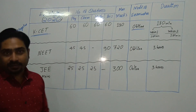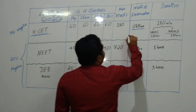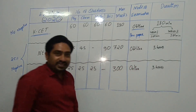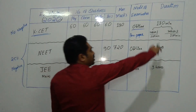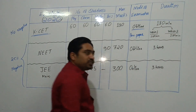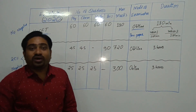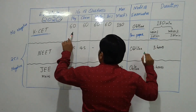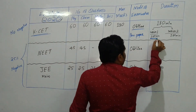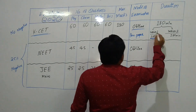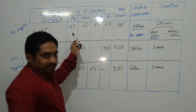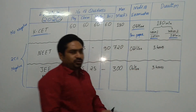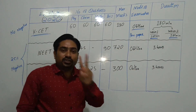The mode of the KCET exam is offline, meaning pen-and-paper based. The total duration of the examination is 180 minutes: Session 1 is 120 minutes covering two subjects, and Session 2 is also 120 minutes covering two more subjects.